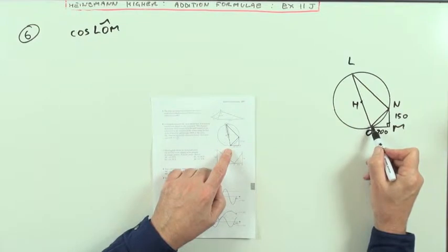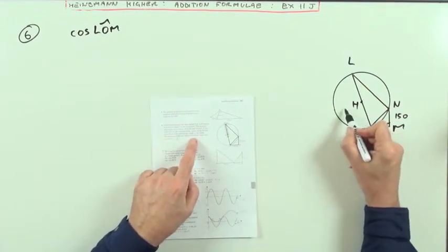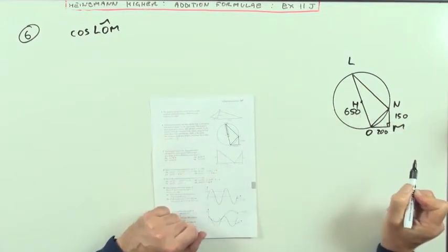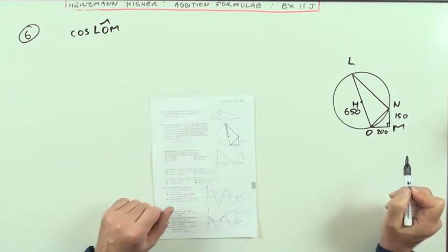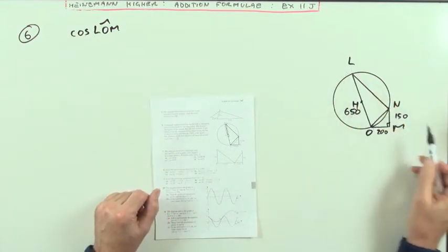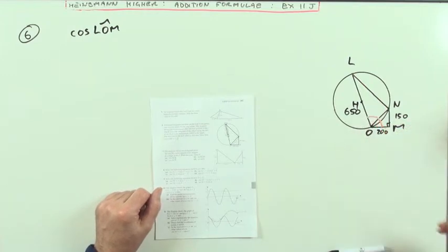LO would be the diameter of the wheel, which it says is 650 millimeters. Define the size of angle LOM, L to O to M, so that would be this angle in here.